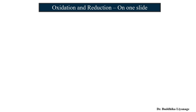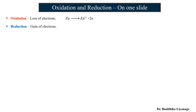Let's talk about oxidation and reduction half reactions in redox reactions. Oxidation is loss of electrons — zinc metal lost two electrons to form Zn²⁺. Reduction needs electron gain — Cu²⁺ gains two electrons to become neutral copper.